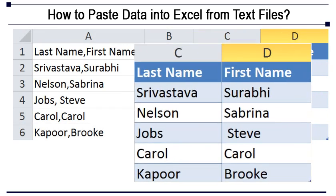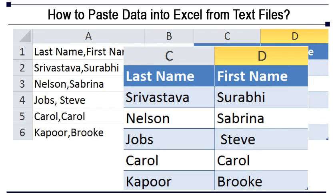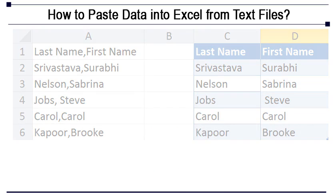For example, if you have last name and first name in a column, you can break the text into two columns — one containing the last name and the other containing the first name. So let's see how we can do that.